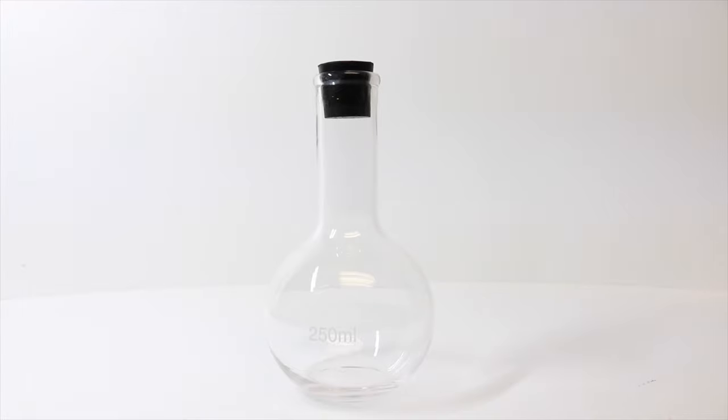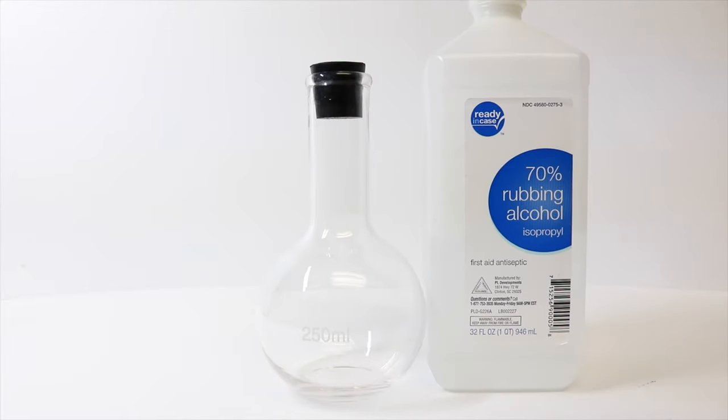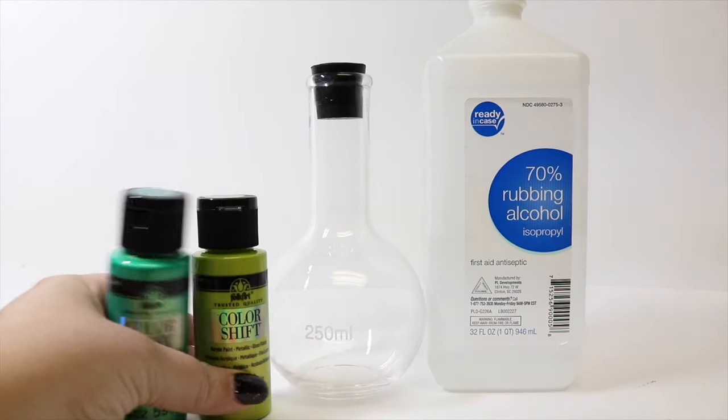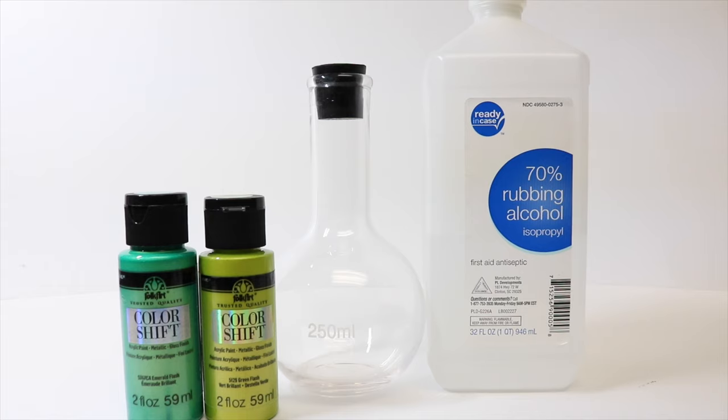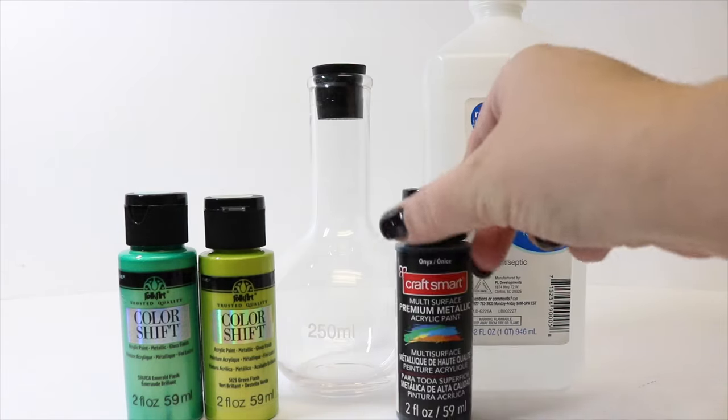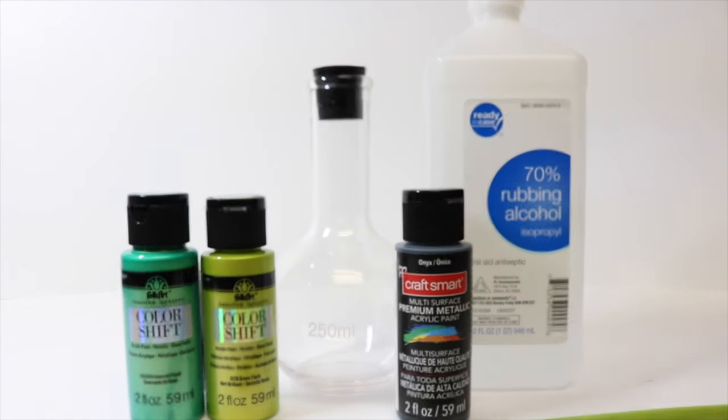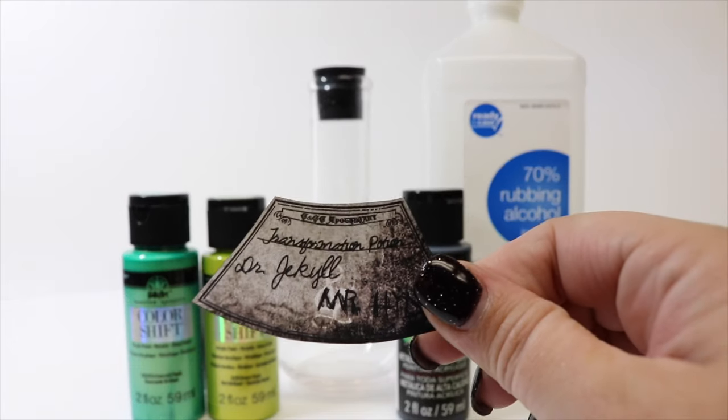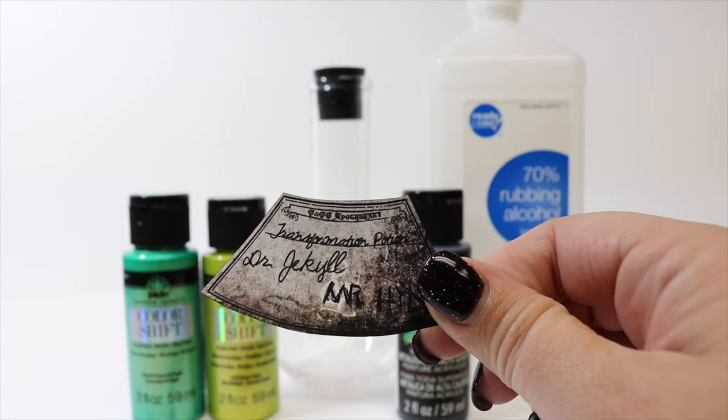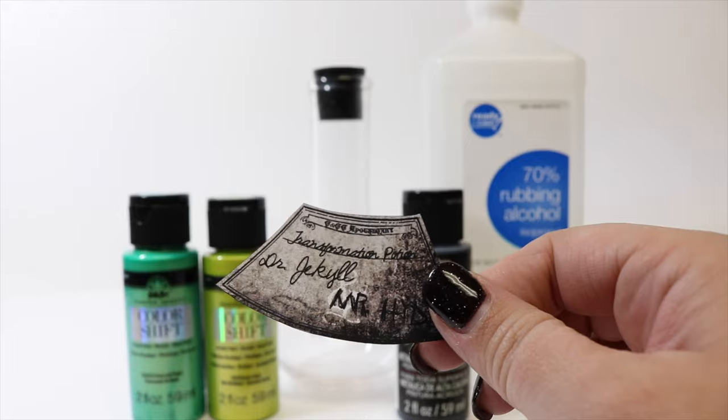The things we will need for our Dr. Jekyll and Mr. Hyde Potion: one 250 milliliter boiling flask with a black rubber cork, rubbing alcohol, folk art color shift acrylic paint in emerald flash and green flash, black acrylic paint, a paintbrush, and our label printed on printable vinyl. The link is in the description below. Let's get started.